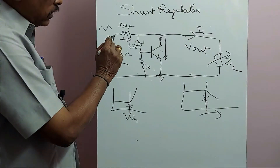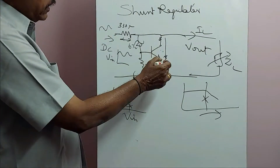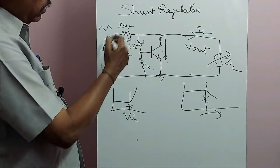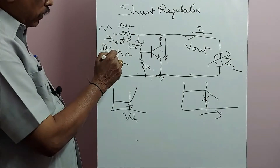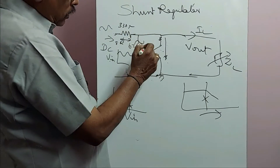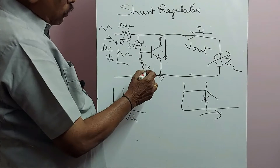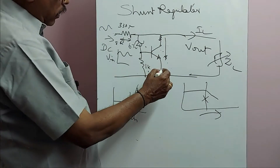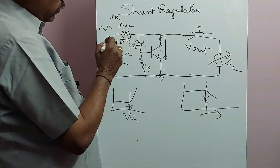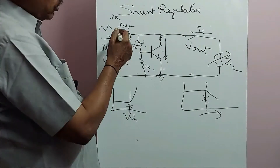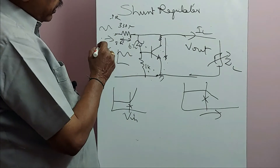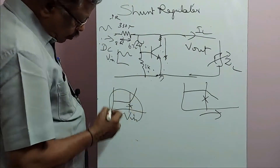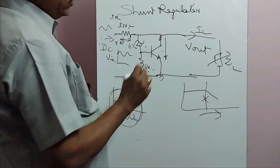When input voltage is changing upward, the current is more here, making the IR drop larger. If the voltage is coming down, there will be a lower current through the collector and a smaller IR drop. So when input goes down, small drop occurs; when input goes high, larger drop occurs. That is why the output voltage is kept constant — changes in input are absorbed by the IR drop across the resistor.